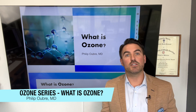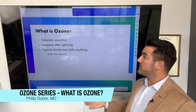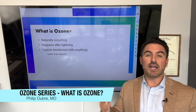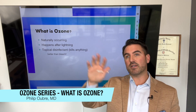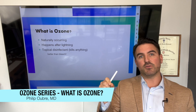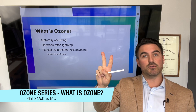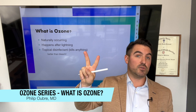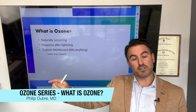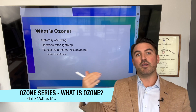So the first question is: what is ozone? The first answer is it's naturally occurring — it's something that already happens in our environment. As lightning strikes in the clouds or in the air, it separates the oxygen molecule. The oxygen molecule is O2, and it splits into two separate oxygen atoms. Those atoms then attach to other O2 molecules, making O3. Now you have ozone.